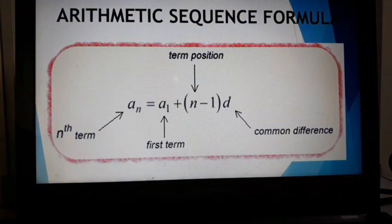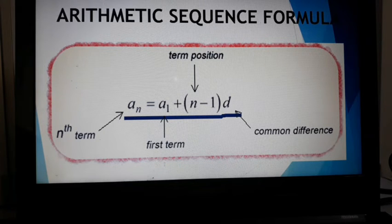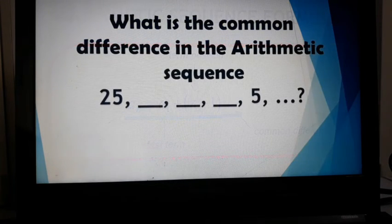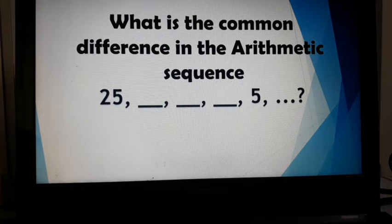Remember, the formula is a sub n equals a sub 1 plus the quantity of n minus 1 times d, which is your common difference. Let's use our example earlier. What's the common difference in the arithmetic sequence 25, blank, blank, blank, 5? Remember, in this arithmetic sequence, we only have a sub 1, which is the first term, and a sub 5, or the fifth term.